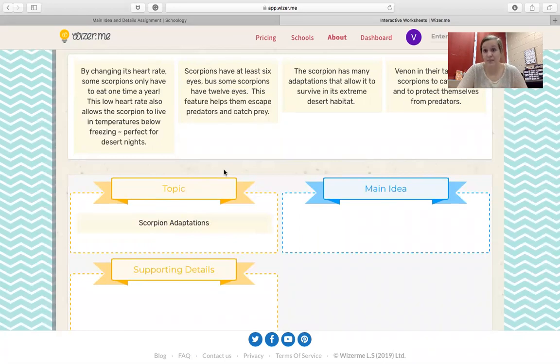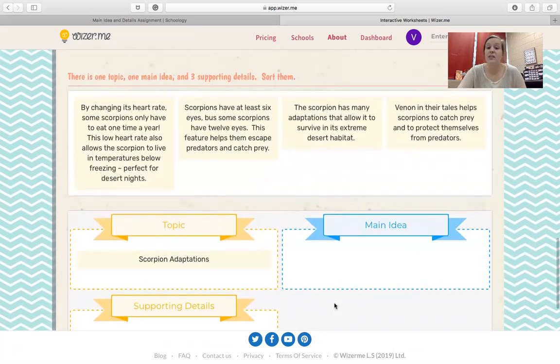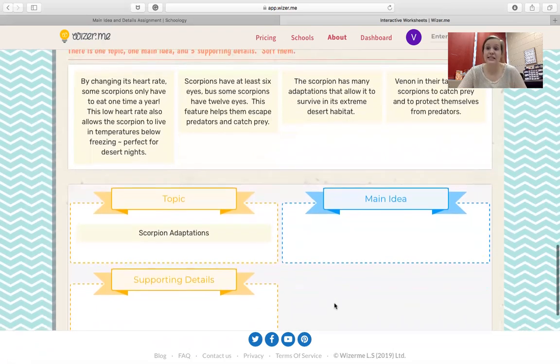Your main idea is going to be what the whole text is about, so it's not going to be very specific. Then your supporting details are going to support your main idea or back it up, so they're going to be more specific. And you should have one main idea and three supporting details.